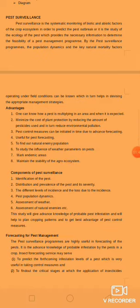The components of pest surveillance include: identification of pest distribution and prevalence of the pest and its severity, the different levels of incidence and the loss due to the incidence, pest population dynamics, assessment of weather, and assessment of natural enemies. This study provides advanced knowledge of probable pest infestation and helps to plan cropping patterns and to get the best advantage of pest control measures.